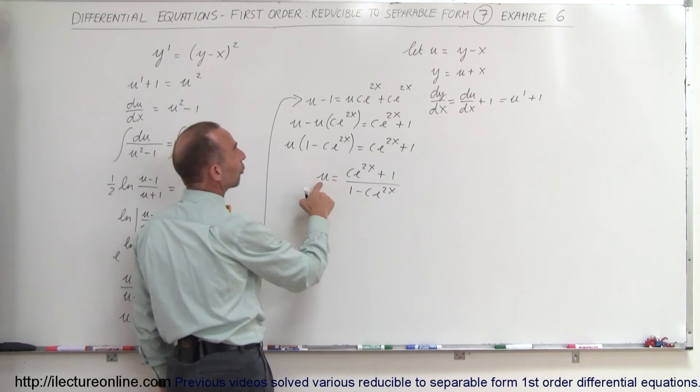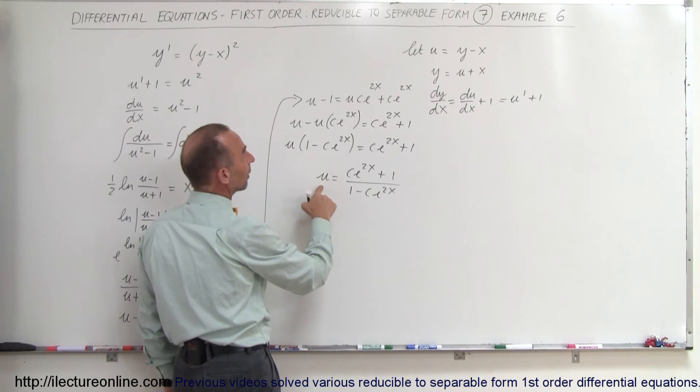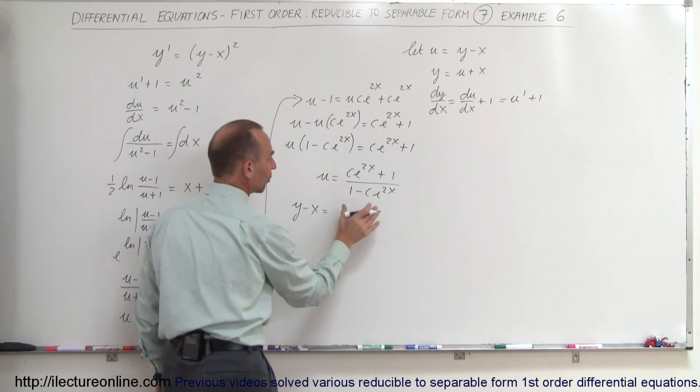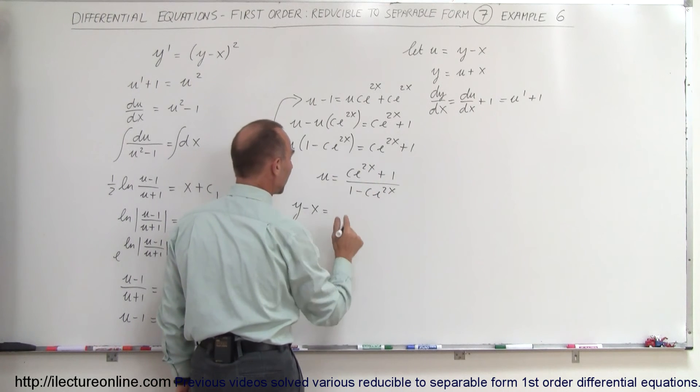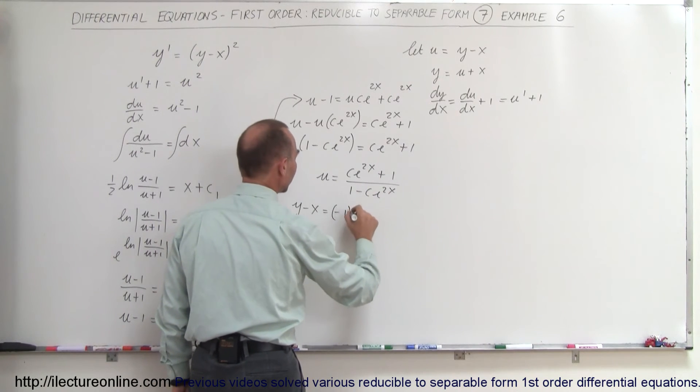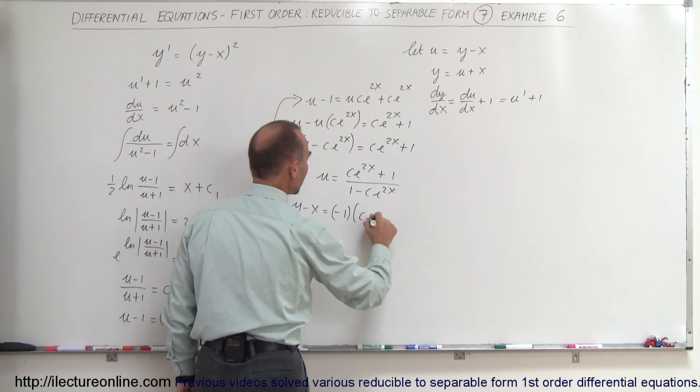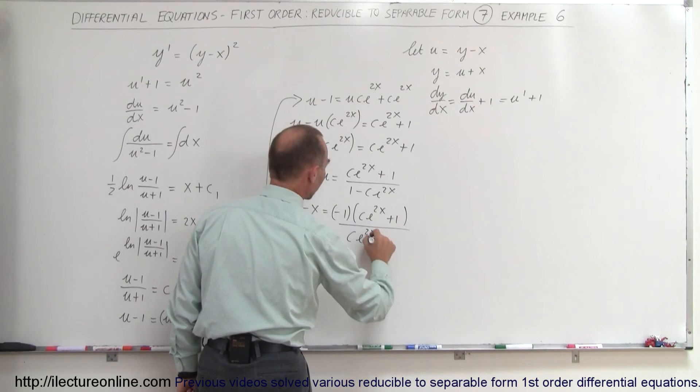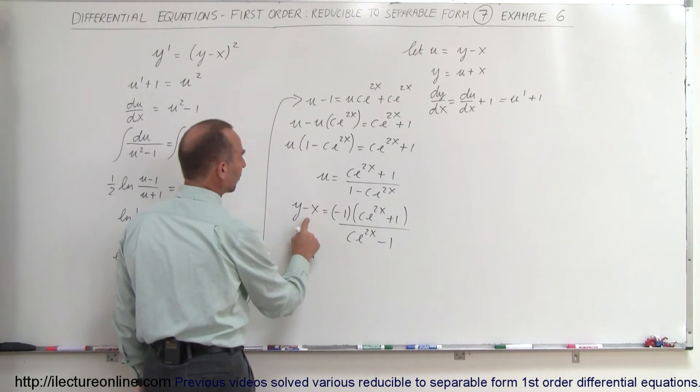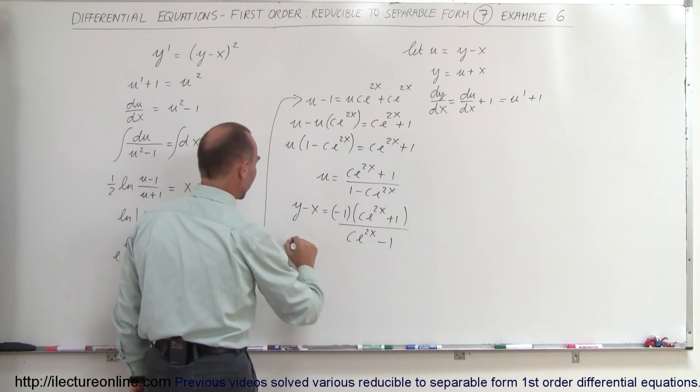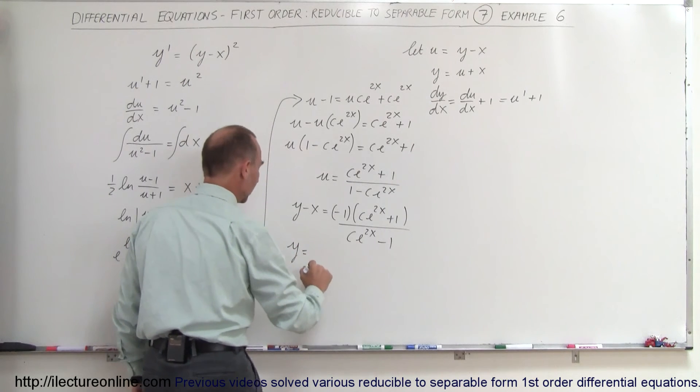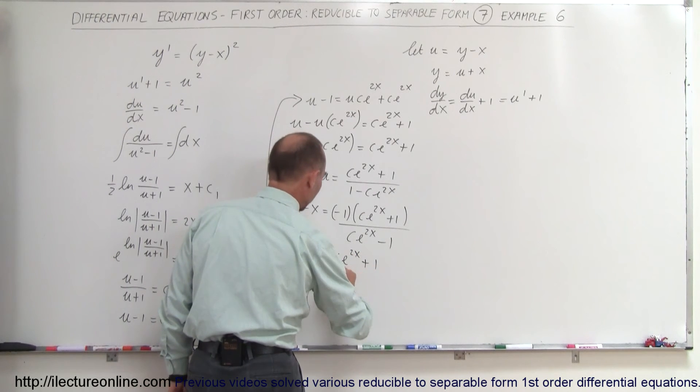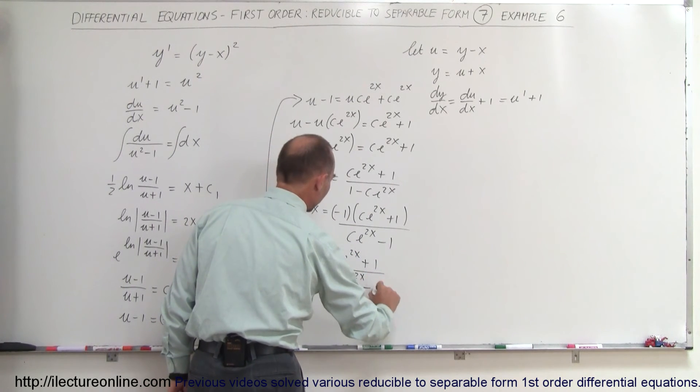Now we substitute for u. Instead of u we can write y minus x, so y minus x equals, I'm going to multiply the denominator and numerator by minus 1, so it's minus 1 times (c e to the 2x plus 1) divided by (c e to the 2x minus 1). Then I can bring the x over, so we have y equals x minus (c e to the 2x plus 1) divided by (c e to the 2x minus 1).